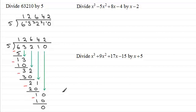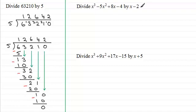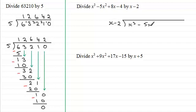Same answer as before but a different style. It looks a lot longer, but we're going to need this style when it comes to handling algebraic long division. So let's have a go at this one: divide x cubed minus 5x squared plus 8x minus 4 by x minus 2. We're dividing x minus 2 into the polynomial x cubed minus 5x squared plus 8x minus 4. As before, we take the x and say — what do we multiply x by to get x cubed? That has to be x squared. So write that up there.